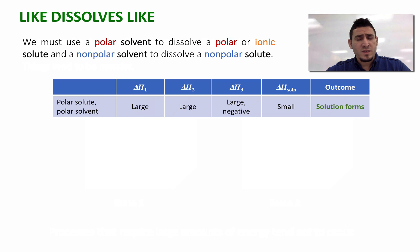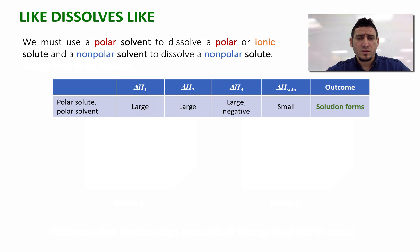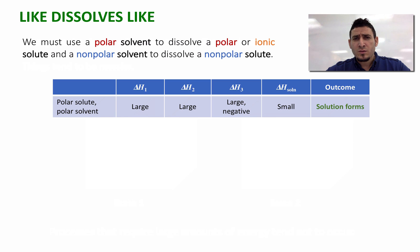Having explained this, we now have a better understanding of the expression "like dissolves like." We must use a polar solvent to dissolve a polar or ionic solute, and a non-polar solvent to dissolve a non-polar solute. In the case of a polar solute and a polar solvent, both substances have strong intermolecular interactions between their particles. Therefore, to expand their particles we need more energy, and ΔH1 and ΔH2 will both be large positive. When the solute and solvent are mixed together, strong intermolecular interactions will form, so a lot of energy will be released and ΔH3 will be large negative. In this case, ΔH_solution will be small — whether it's a small negative or small positive, the solution still forms.